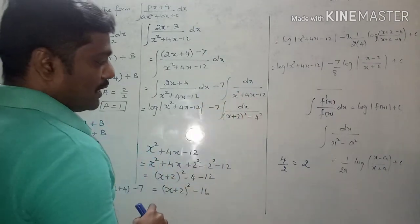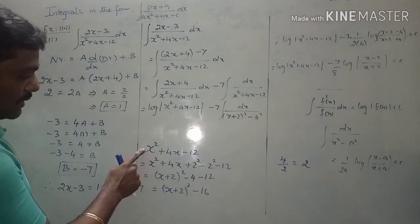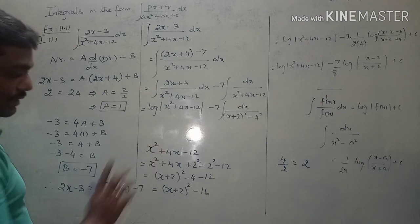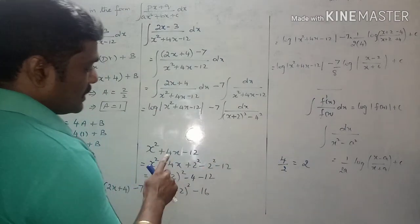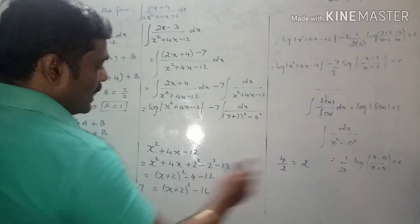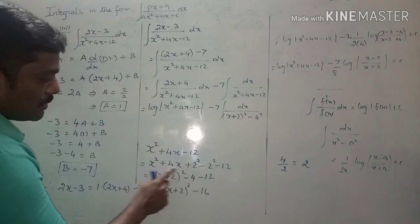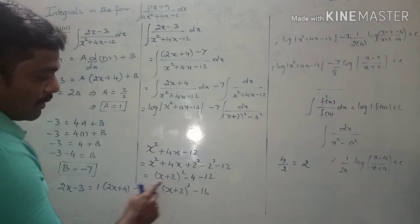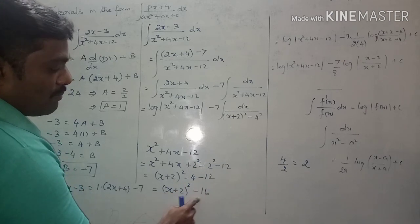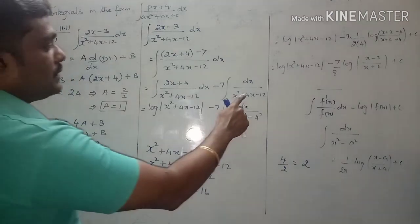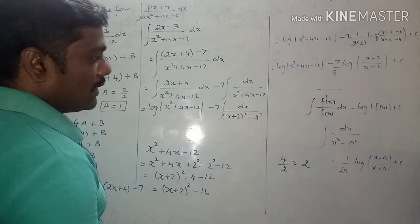For the second integral, use the completion of square method. Step 1: take the x² coefficient as common — here it is 1, so nothing to take. Step 2: divide the x-coefficient by 2; here 4 divided by 2 gives 2. Add and subtract 2²: we get (x + 2)² minus 4 minus 12 = (x + 2)² minus 16, which is (x + 2)² minus 4².